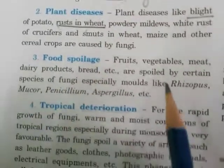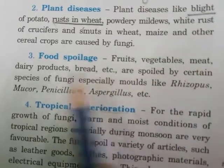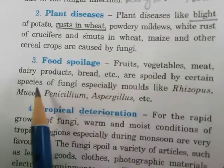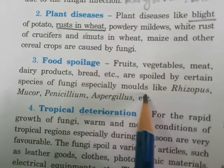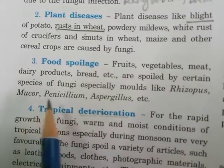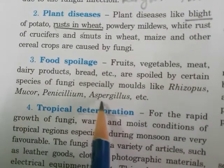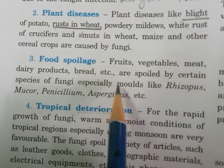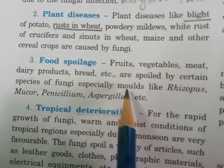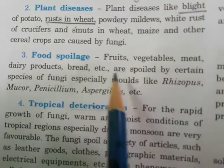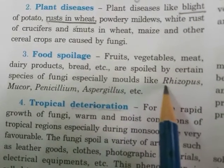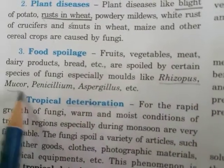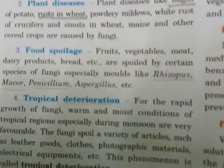Food spoilage: fruits, vegetables, meats, dairy products, bread, etc. are spoiled by certain species of fungi, especially molds of Rhizopus, Mucor, Penicillium, Aspergillus, etc. Many fruits, vegetables, and even bread are destroyed by different types of fungi.